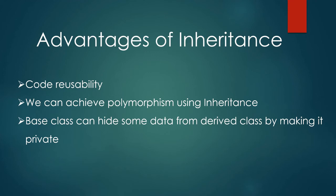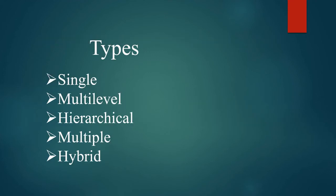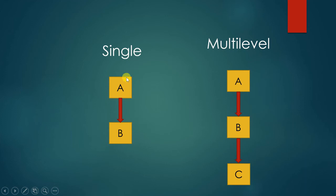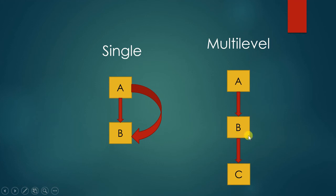There are five types of inheritance in total. Single inheritance: class B extends class A — class B inherits properties from class A. Multilevel inheritance: three classes — class A, class B extends class A, and class C extends class B.